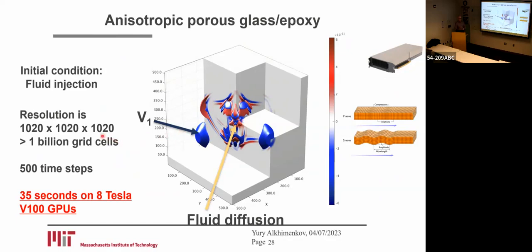The resolution is 1,000 cube — corresponding to 1 billion grid cells — and it took us just 35 seconds on eight Tesla V100 GPUs. You can see that we can model quite realistic scenarios using GPUs.